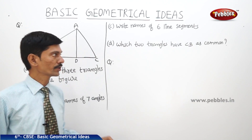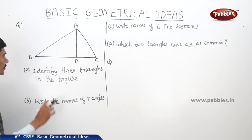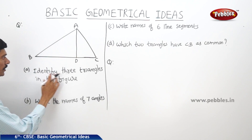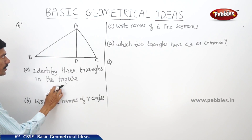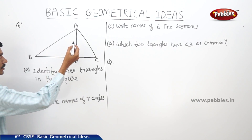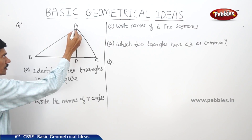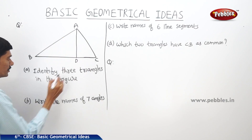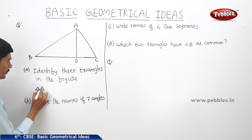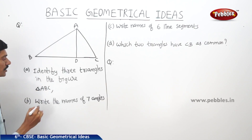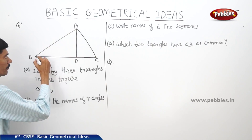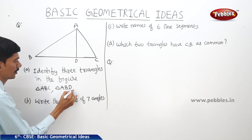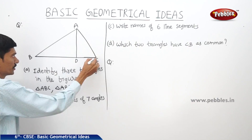Now let us solve a problem based on triangles. From the given figure, identify three triangles. The first triangle is triangle ABC, the second one is triangle ABD, and the third one is triangle ACD.